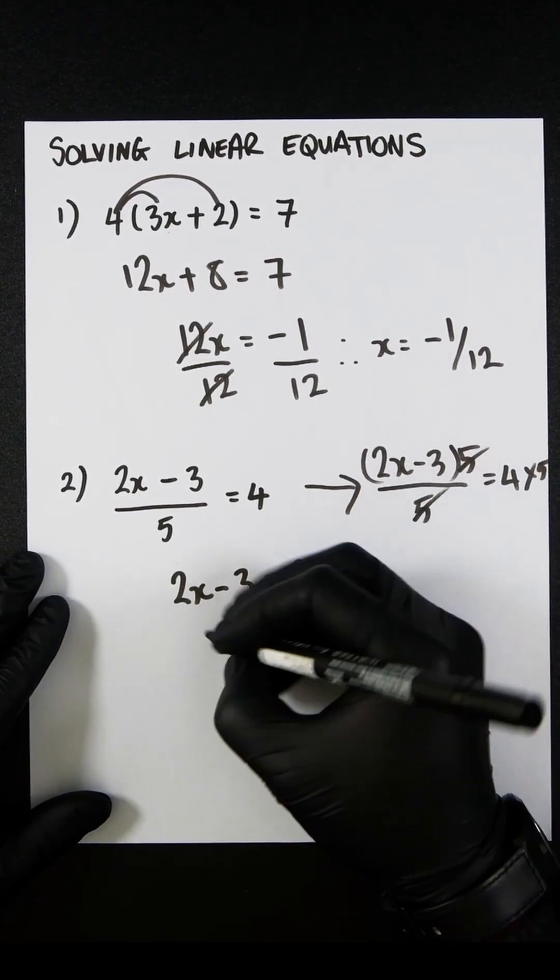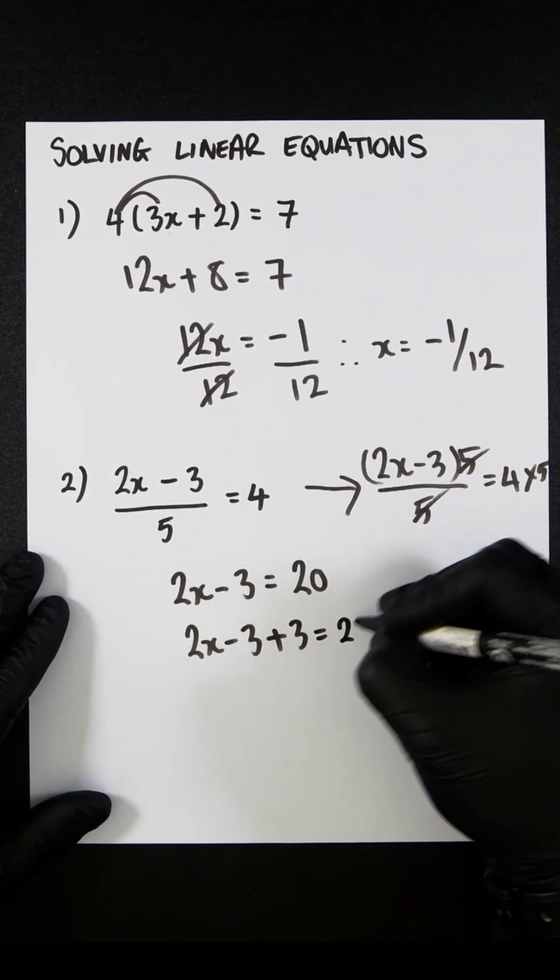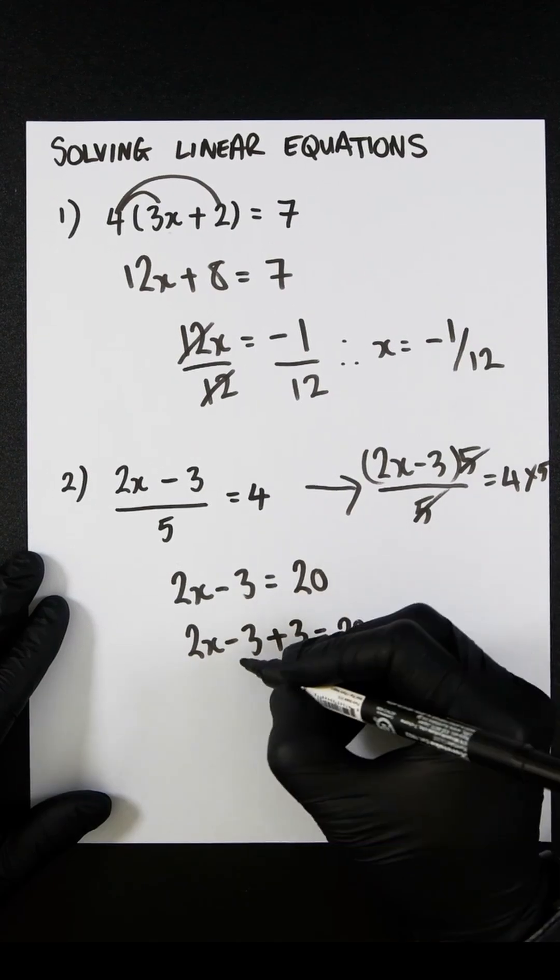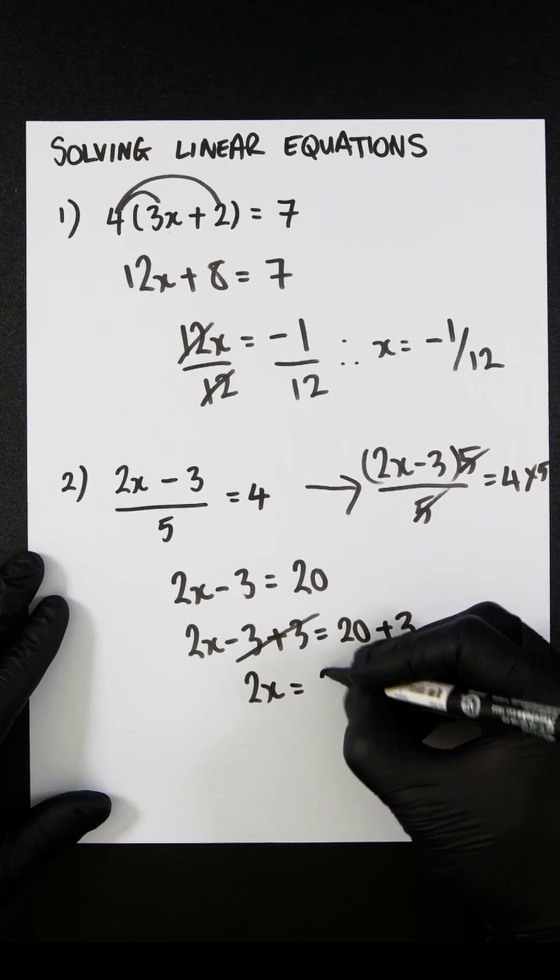Let's add 3 to both sides. We're going to get 2x minus 3 plus 3 equals 20 plus 3. These will cancel out, and you will now get 2x equals 23.